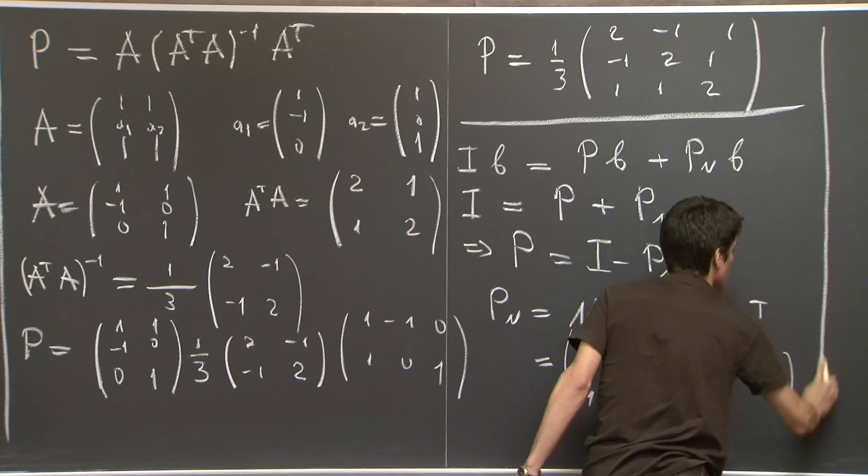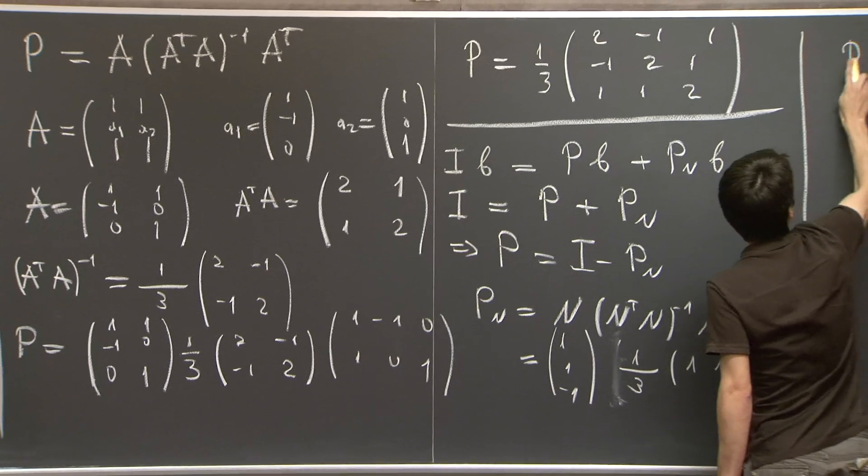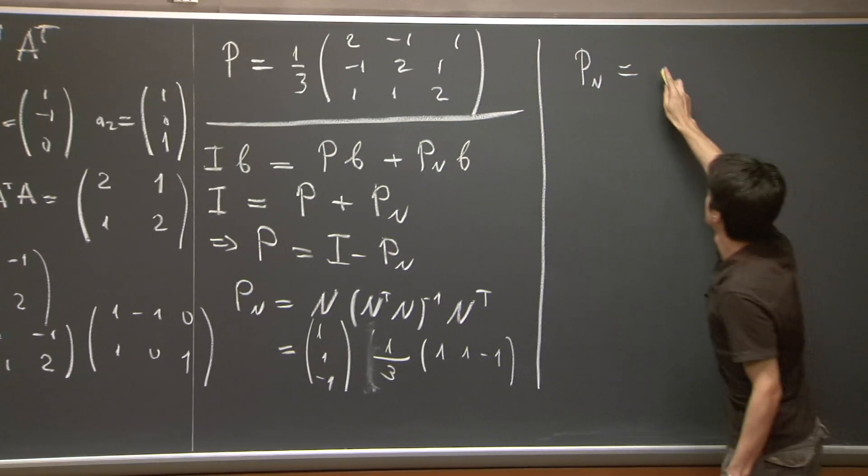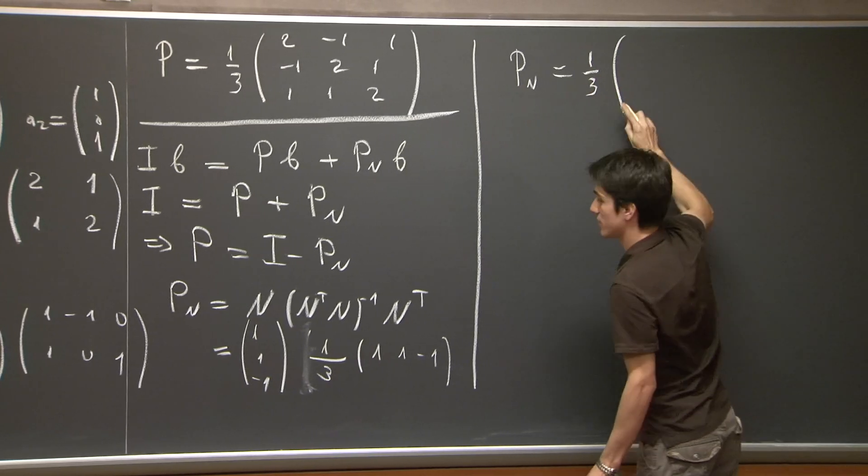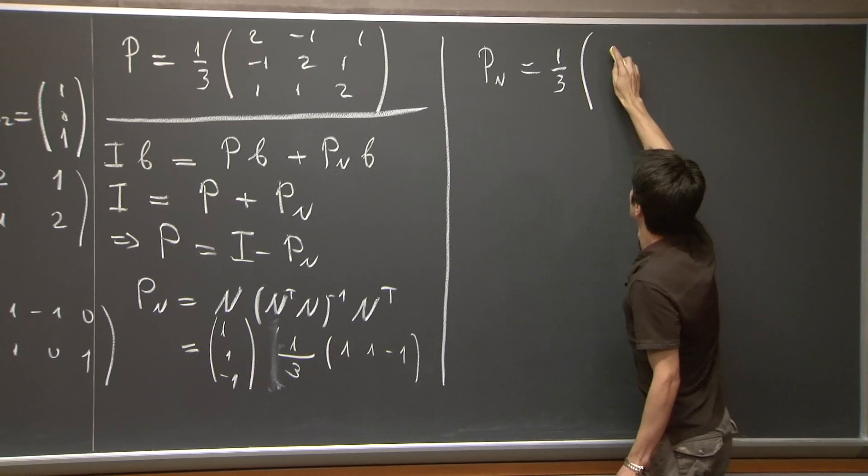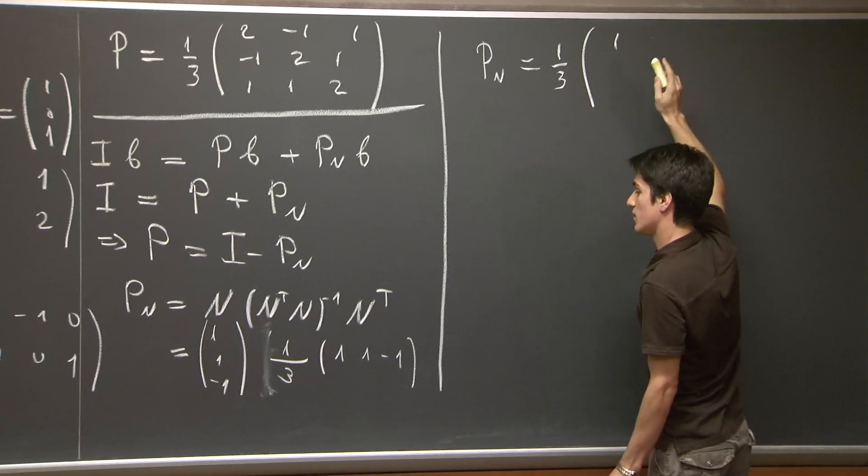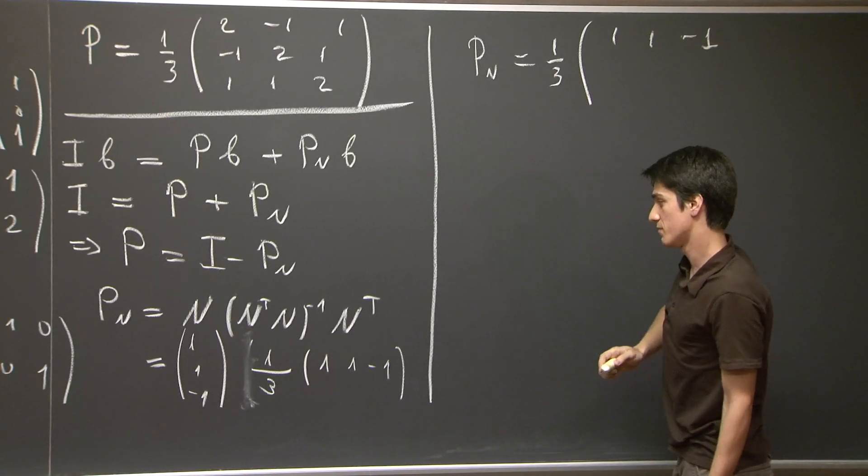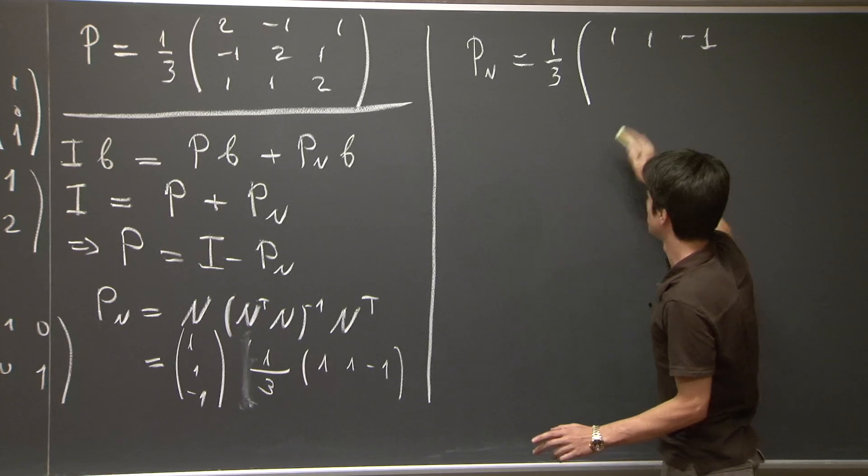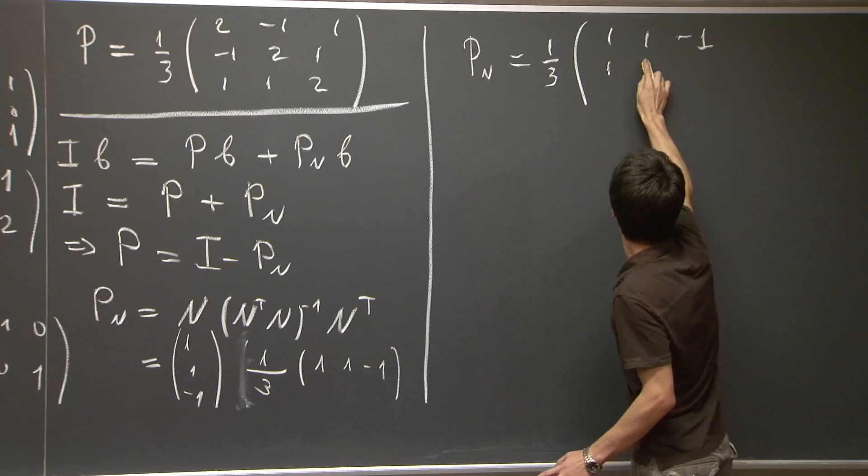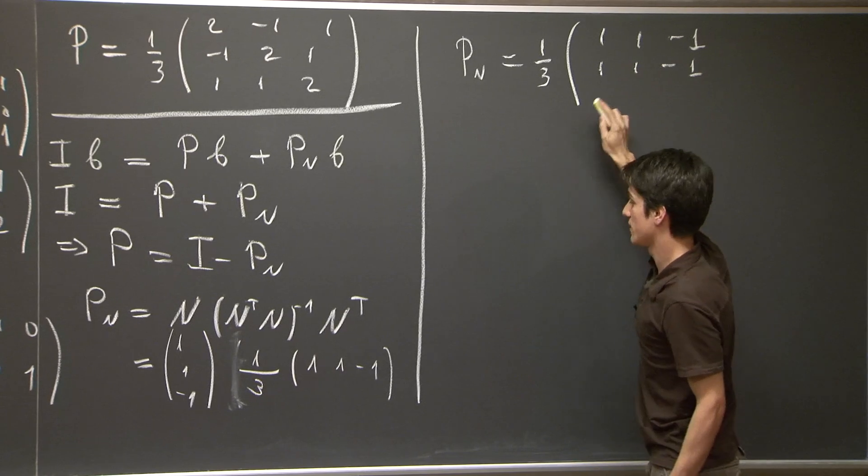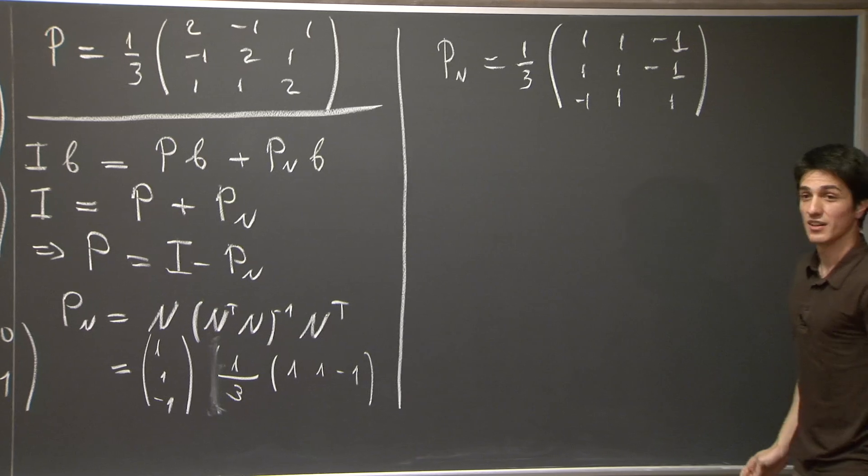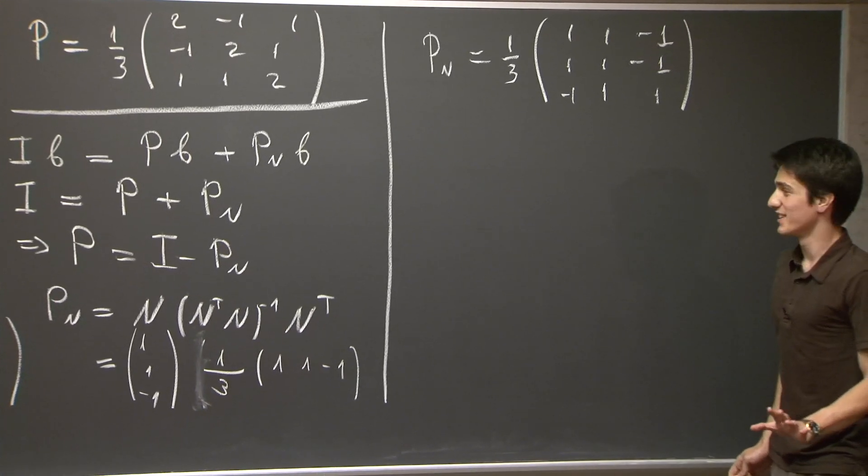OK? I'm going to write the answer here. It's 1/3, 1, 1, negative 1, 1, negative 1, and negative 1, 1, 1. Right?